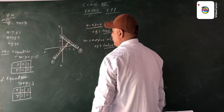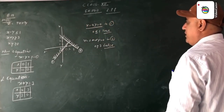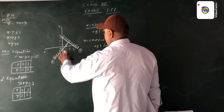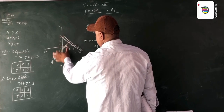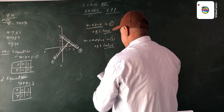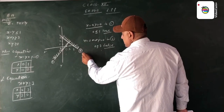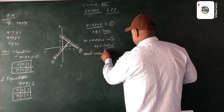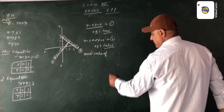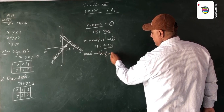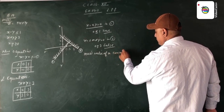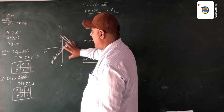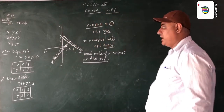Now we need to find the common area of both these equations. We have found that there is no common area of both these equations. Therefore, the maximum value of z cannot be determined. This is question number 14.